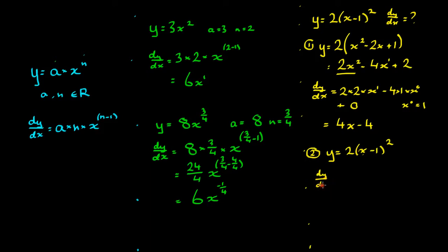dy dx is equal to 2 because 2 is out the front. That's this 2 here times n which is this 2 up here times x minus 1 still in the brackets to the power of 2 minus 1. So it's almost as if we're treating x minus 1 as a single x but we don't forget to include the negative 1 in the brackets.